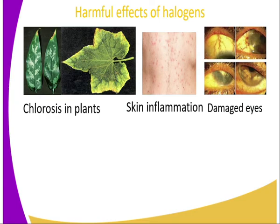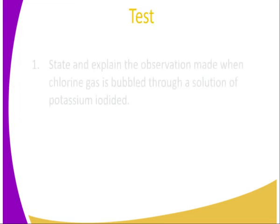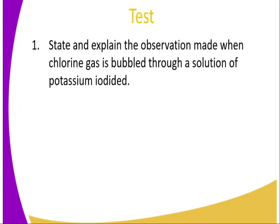Halogens also have various harmful effects. For instance, chlorine causes chlorosis in plants, skin inflammation, and damage to the eyes. It also leads to corrosion on sceneries and metals, destroying their attractive nature. So while halogens have important uses, they also have significant side effects.